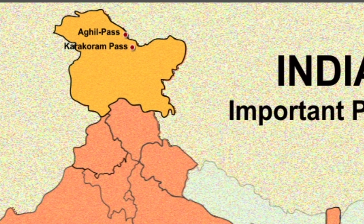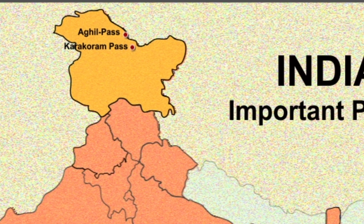It also plays a major geographic role in the dispute between Pakistan and India over control of the Siachen Glacier area immediately to the west of the pass. There is no motorable road across the pass and the pass currently remains closed to all traffic.